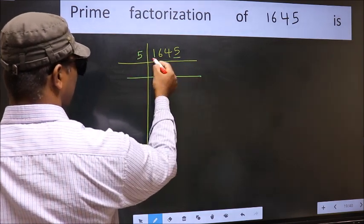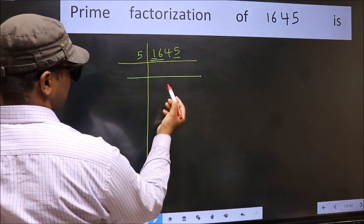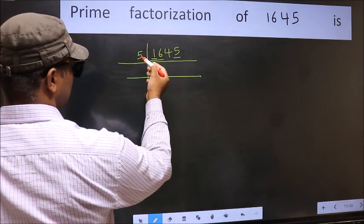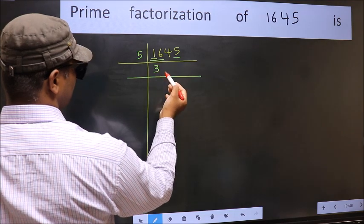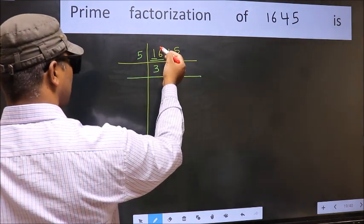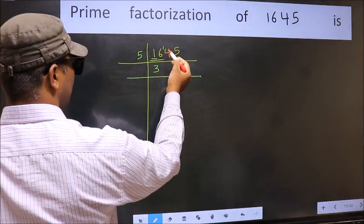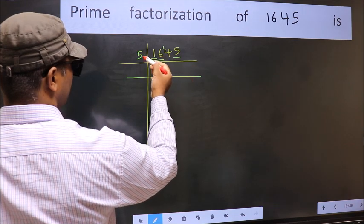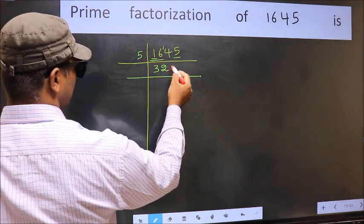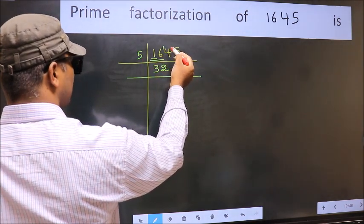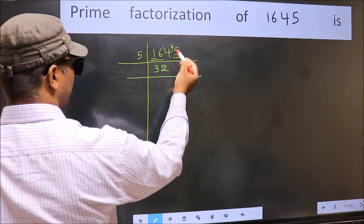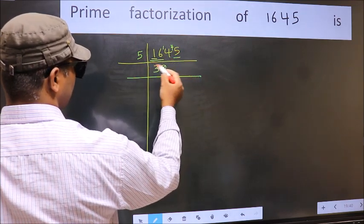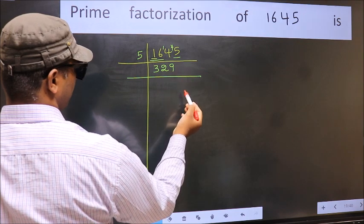First number 1 is smaller than 5, so take two digits: 16. A number close to 16 in the 5 table is 5 times 3 equals 15. 16 minus 15 equals 1, carry forward 1 to make 14. A number close to 14 in the 5 table is 5 times 2 equals 10. 14 minus 10 equals 4, carry forward 4 to make 45. When do we get 45 in the 5 table? 5 times 9 equals 45.